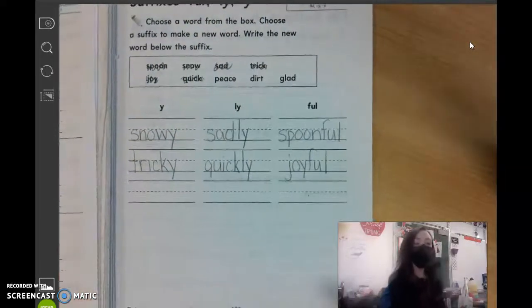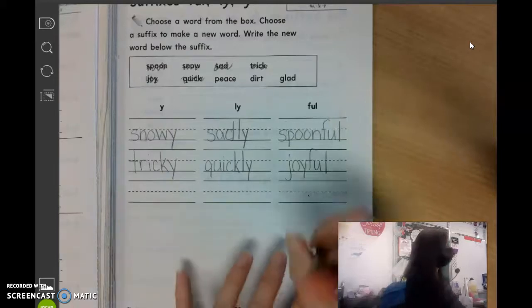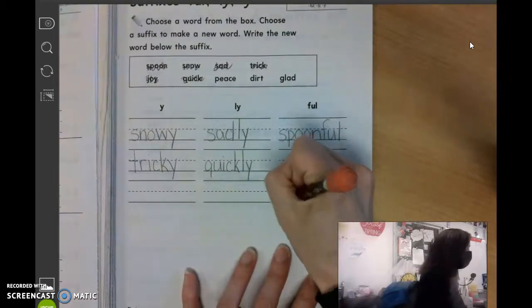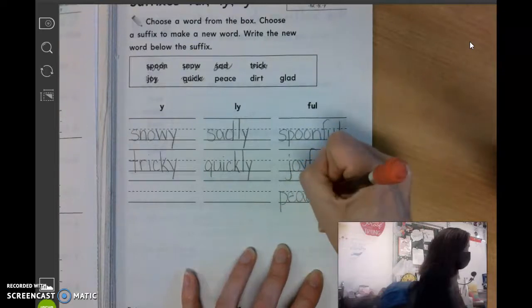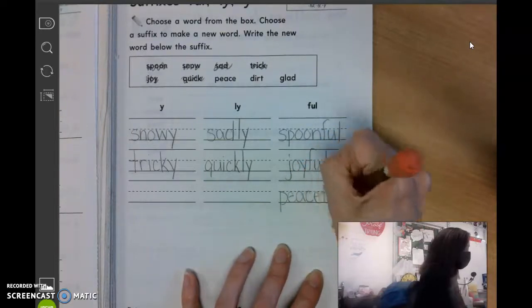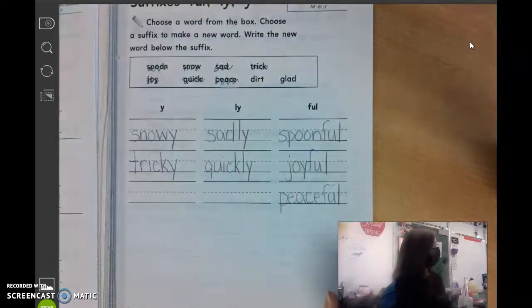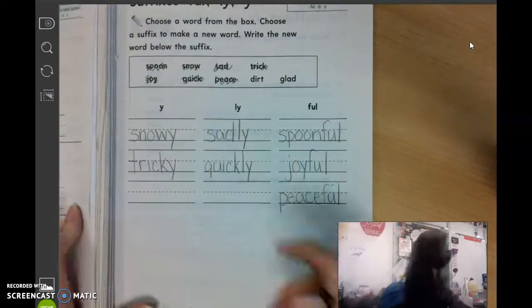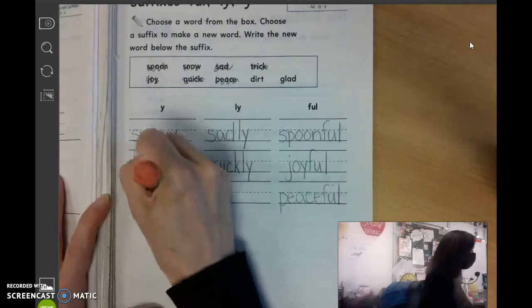What about the word peace? Owen? Peaceful. Good. They were very peaceful. You write the whole word and you add F-U-L. Peaceful. What about dirt? Logan? Dirty. And the Y. D-I-R-T-Y.